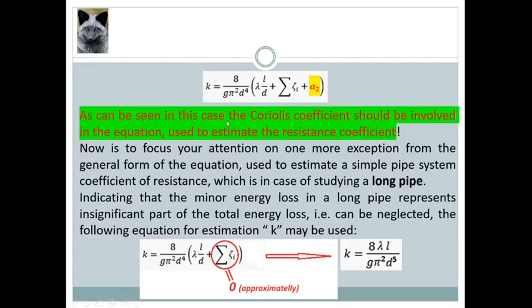The most important now. As can be seen in this case, the Coriolis coefficient should be involved in the equation used to estimate the resistance coefficient. This is the main difference comparing the two studied cases.